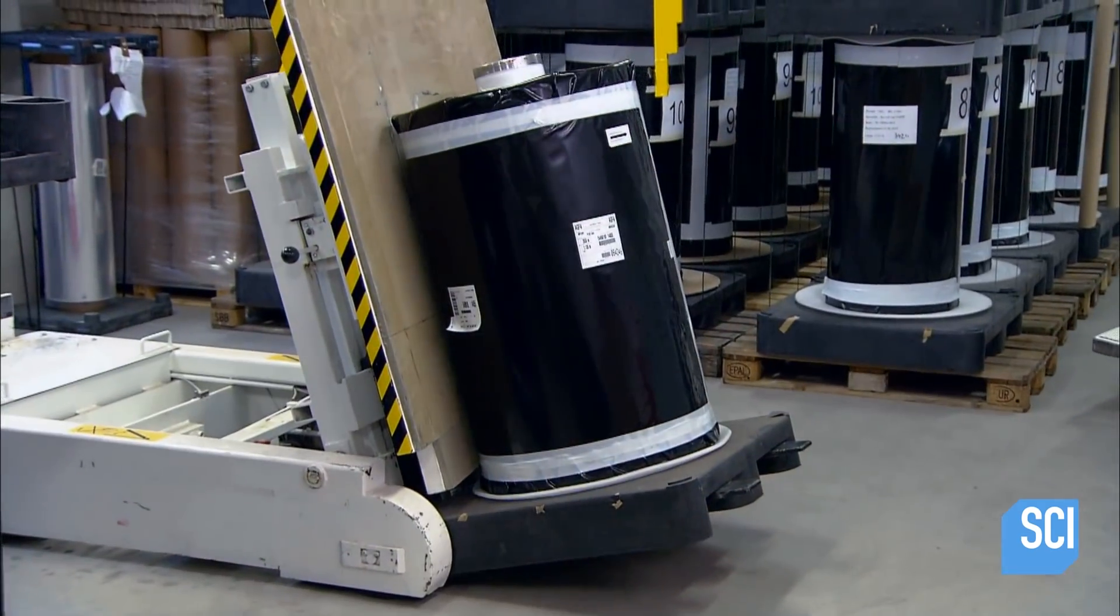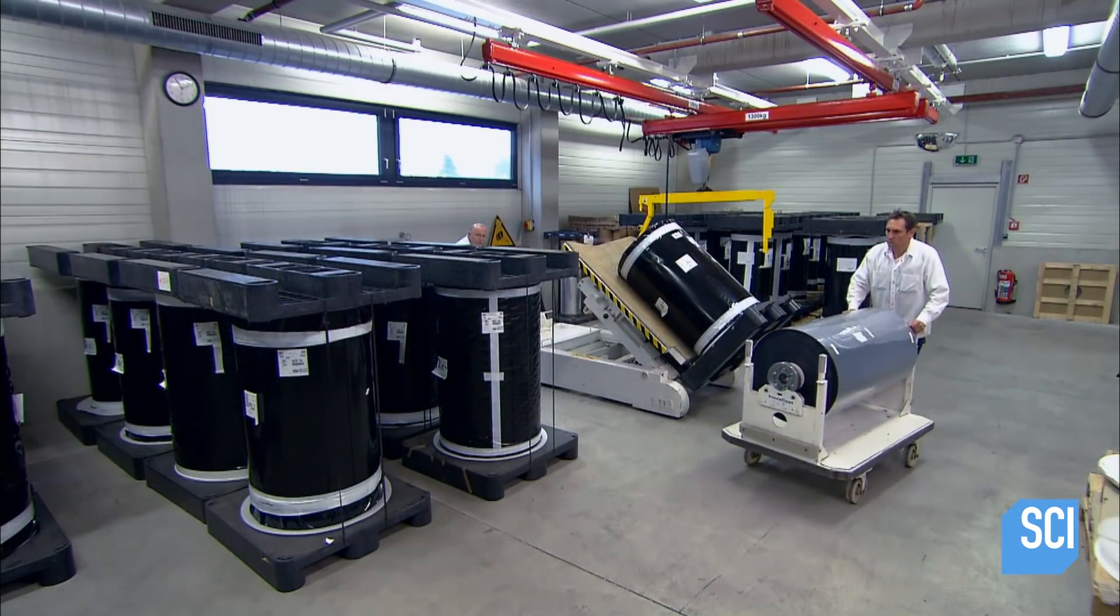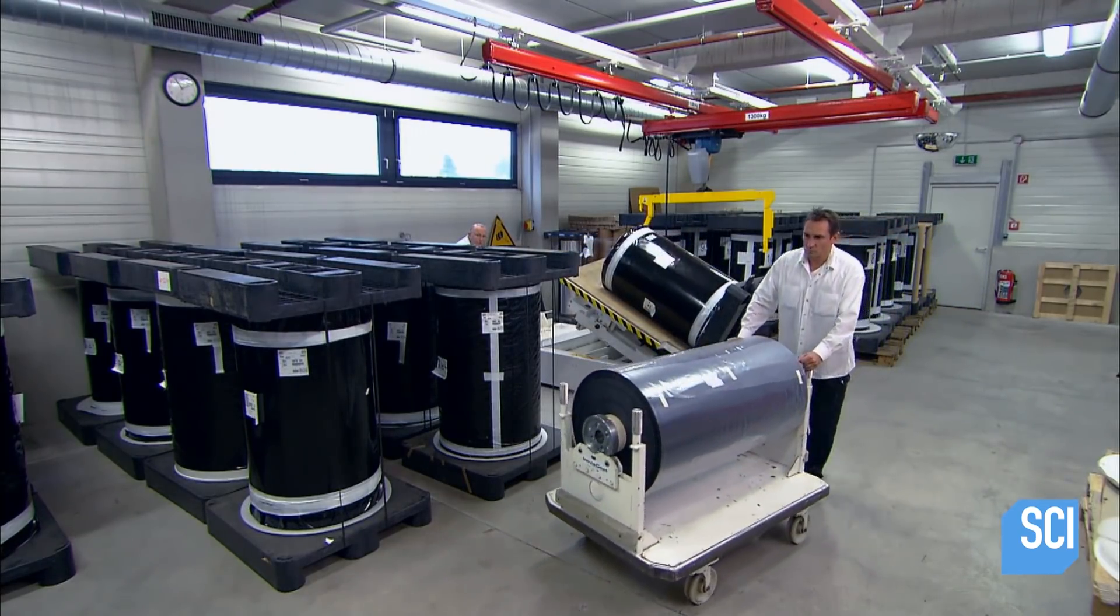Coiled up and packed into light-tight drums, the color negative material is now on its way to a second factory to be assembled into the instant film pack.